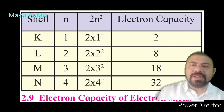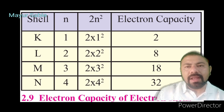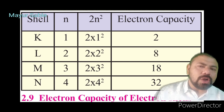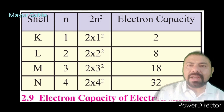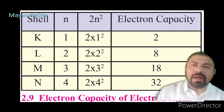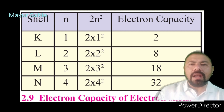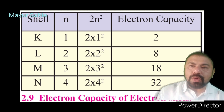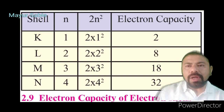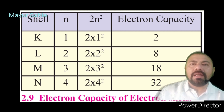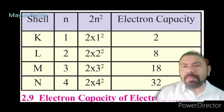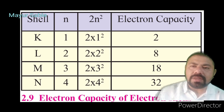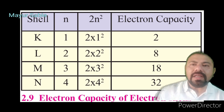The first shell nearest to the nucleus is the K shell, then the L, M, and N shells. According to the formula 2n²: for the K shell (n=1), capacity = 2×1² = 2 electrons. For the L shell (n=2), capacity = 2×2² = 8 electrons. For the M shell (n=3), capacity = 2×3² = 18 electrons.